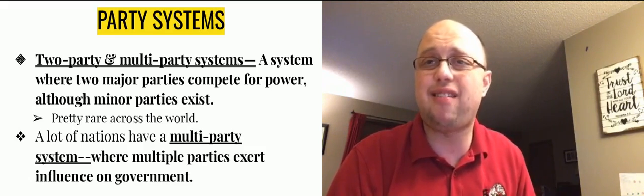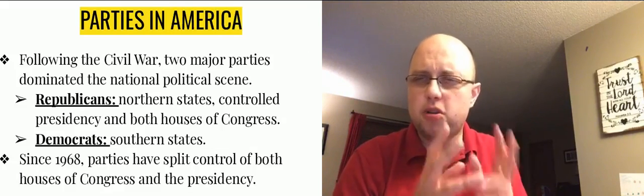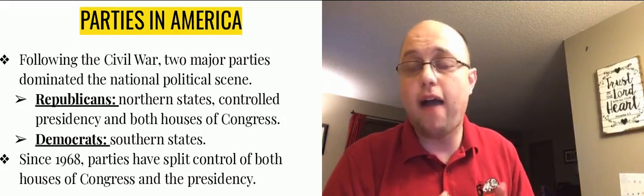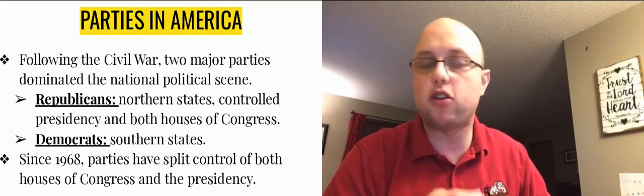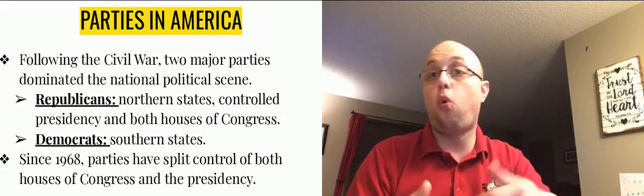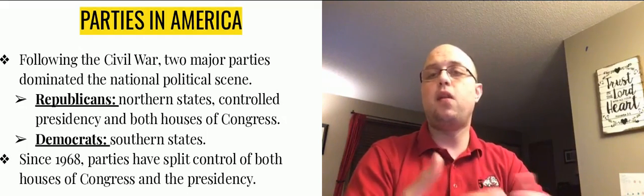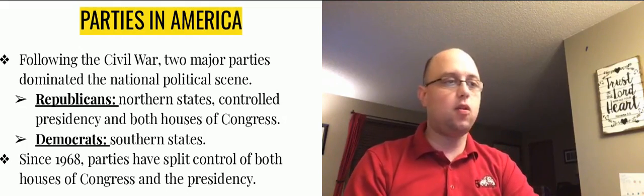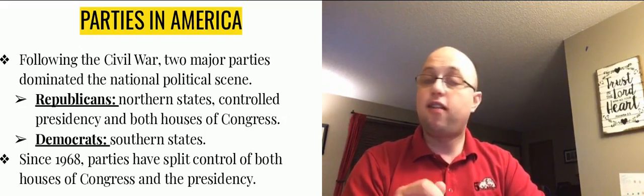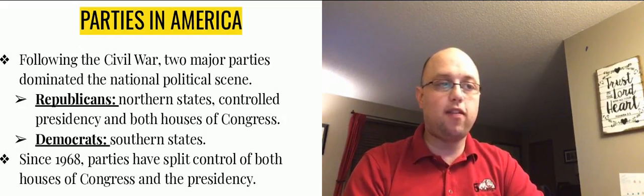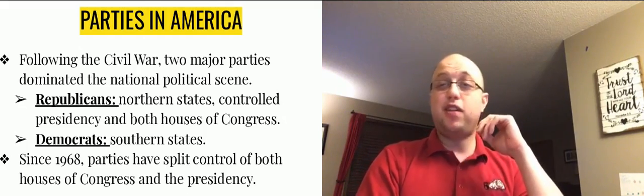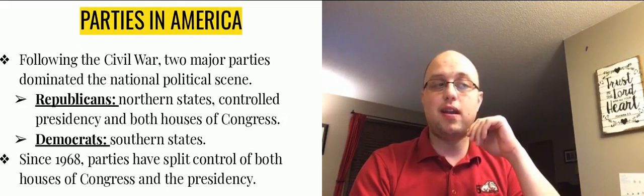The two-party system, which the United States has, is actually pretty rare. The emergence of our two political parties really happened after the Civil War. In the Civil War we were divided over slavery, so after it, two parties emerged: Republicans in the northern states controlled the presidency — Lincoln — and both houses of Congress. They tended to be the party people flocked to because they were the anti-slavery party. Democrats were the southern party; the southern states were dominated by Democrats. Since 1968, both parties have split control of Congress and the presidency off and on, but from the end of the Civil War for about the next 50 years, the Republicans dominated most of the country.